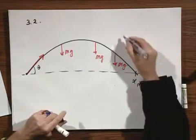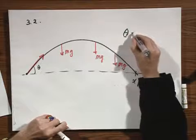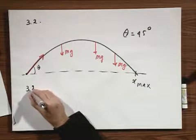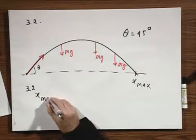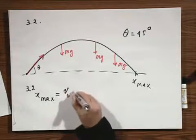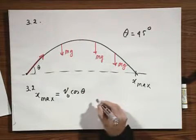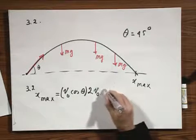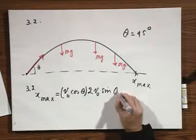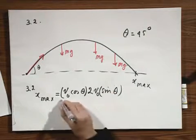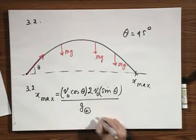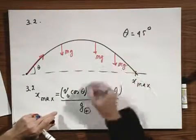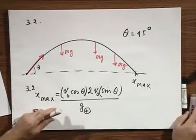Perhaps you remember that the maximum range would be when theta equals forty-five degrees. You can clearly see that from problem 3.2. Because X max equals V zero times cosine of theta times two times V zero times the sine of theta divided by G at Earth. This is the gravitational acceleration at Earth.